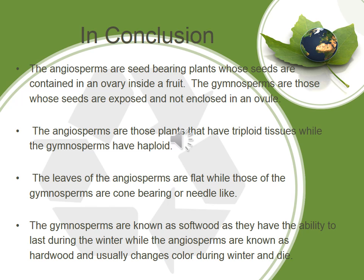In conclusion, angiosperms are seed-bearing plants whose seeds are contained in an ovary inside a fruit. Gymnosperms are those whose seeds are exposed and not enclosed in an ovule. Angiosperms have a triploid tissue while gymnosperms have a haploid. The leaves of angiosperms are flat while those of gymnosperms are cone-bearing or needle-like. Gymnosperms are known as softwood as they have the ability to last during the winter, while angiosperms are known as hardwood and usually change color during the winter and die.